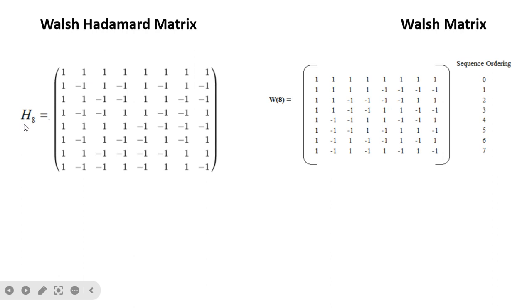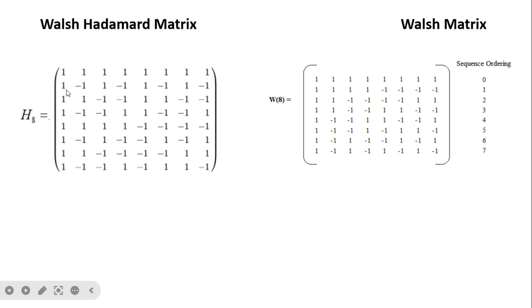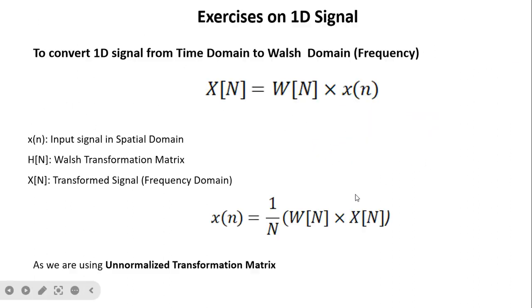For H8, we can easily generate it from the recursive function that we have already seen in the previous video. We just need to arrange the rows so that the sign change order is increasing. The first row has zero sign changes, and the last row has seven sign changes because it is continuously 1,-1,1,-1. So we take that particular row and arrange it last.